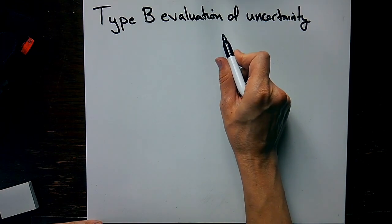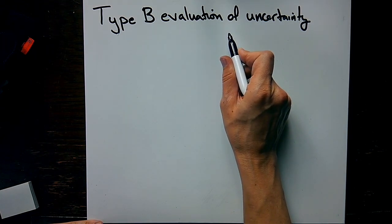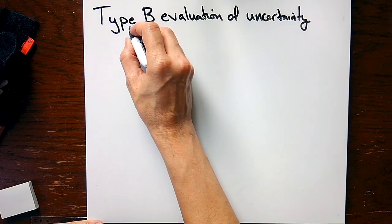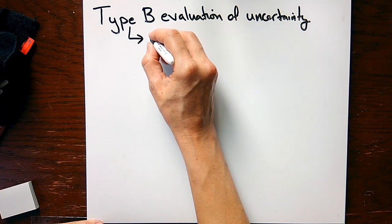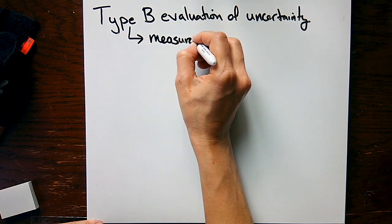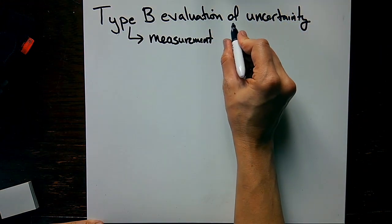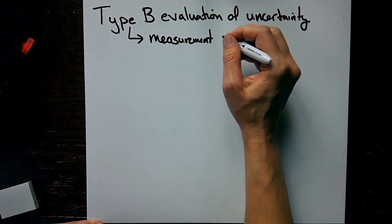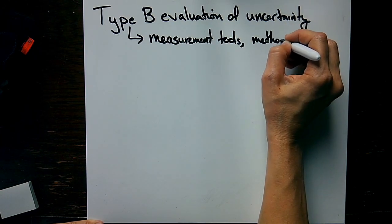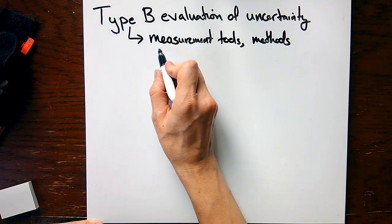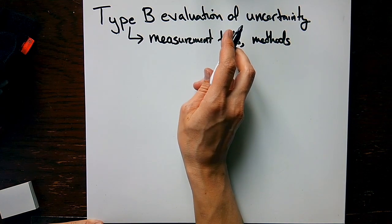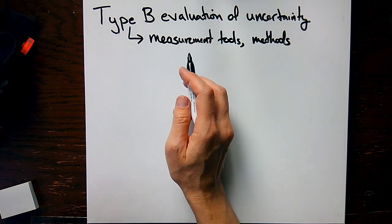This is a discussion of Type B evaluation of uncertainty and how you actually use this when you're making a measurement. Remember this one is associated with the measurement of a single value. When you look at what your uncertainty is in that measurement, you look at the measurement tools, the methods, anything that goes into making a measurement. Now you're looking at how sure am I that I actually measured what I set out to measure.